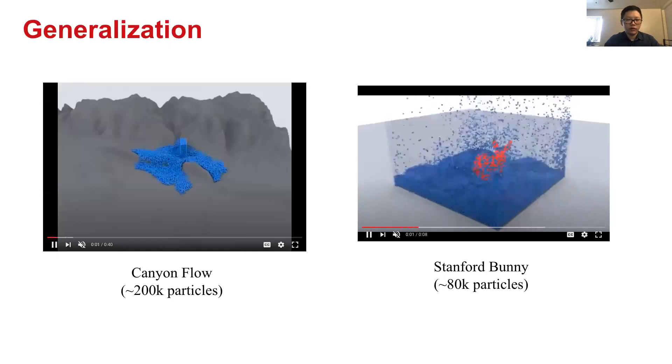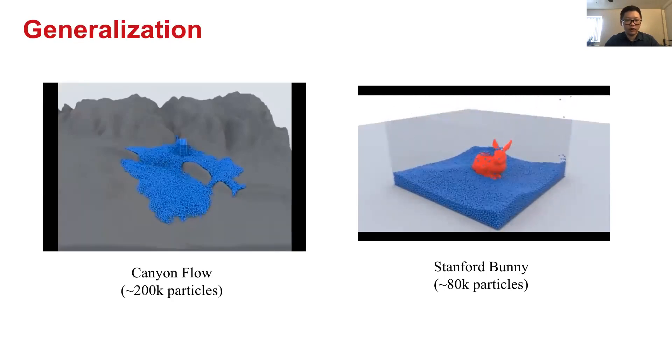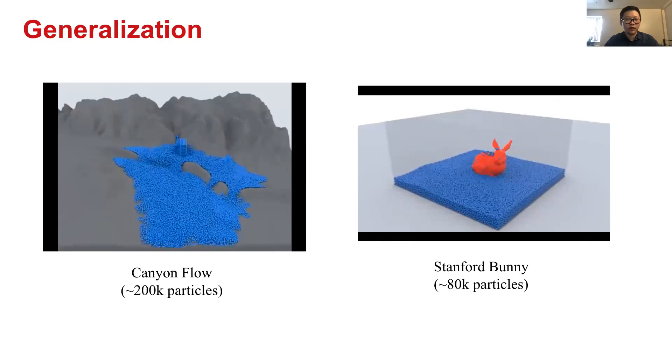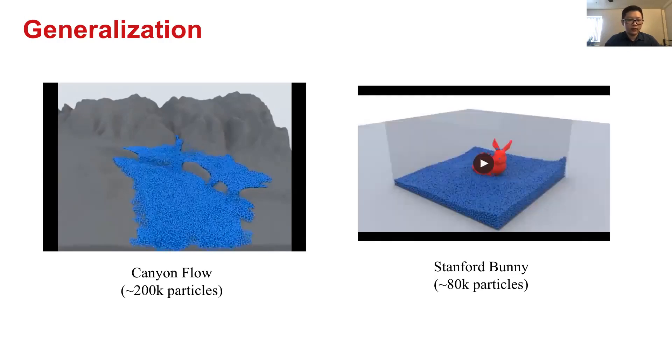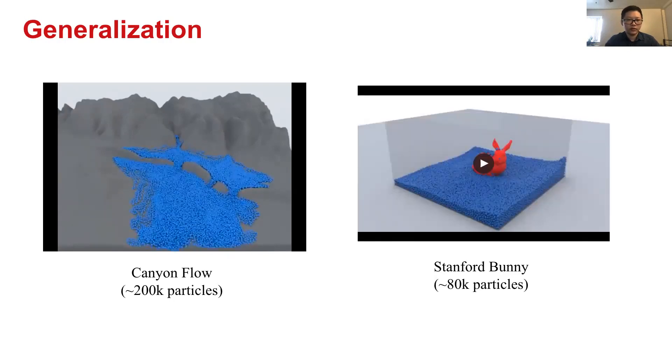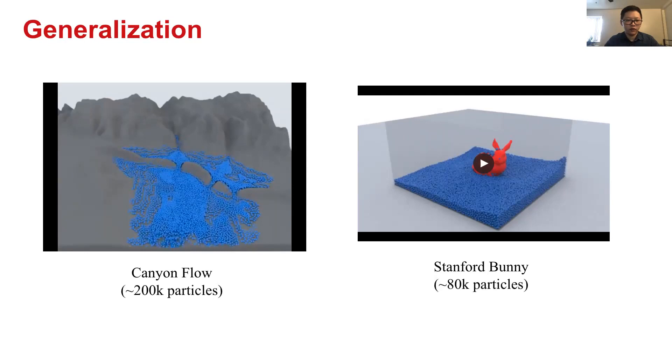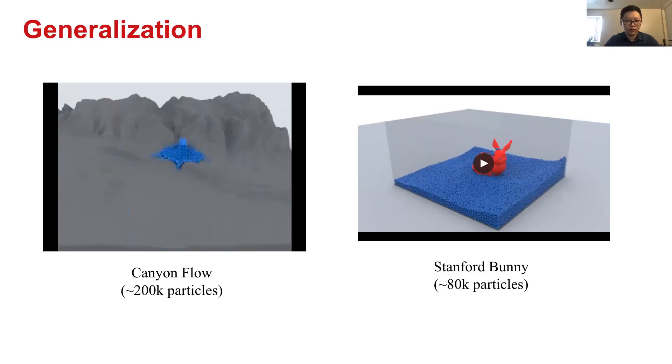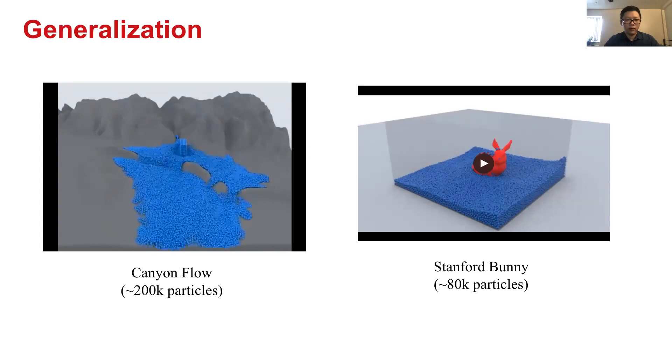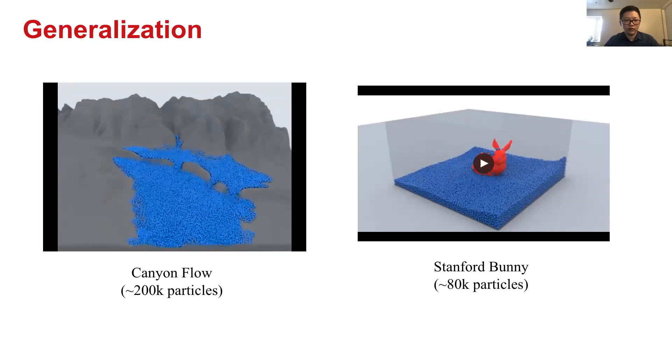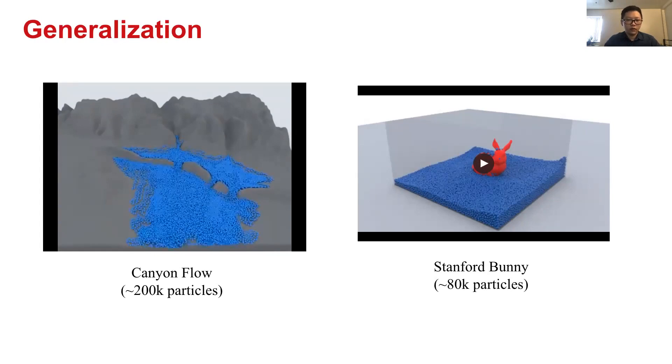Also, despite that the model itself, our data-driven model is trained on very limited and simple training settings, it can be extrapolated to geometries that are complex and beyond the training data distribution. As shown here in the canyon flow and Stanford bunny, two much more complicated geometries are involved and much more particles are in the scene. Our model can still remain robust and accurate.